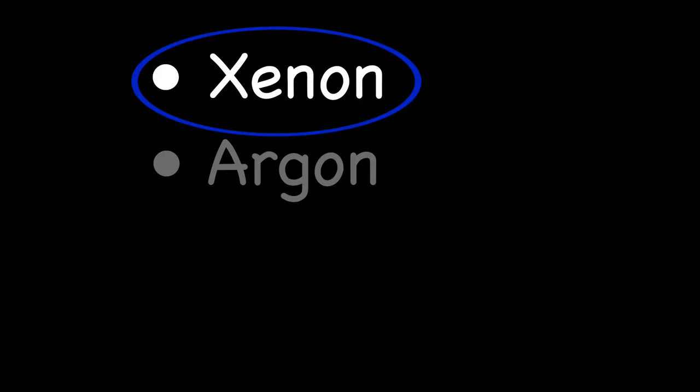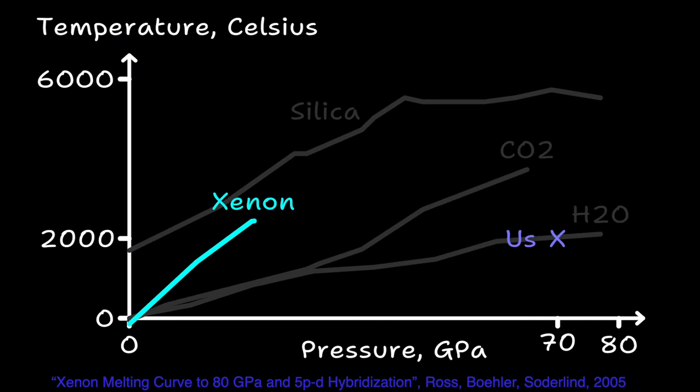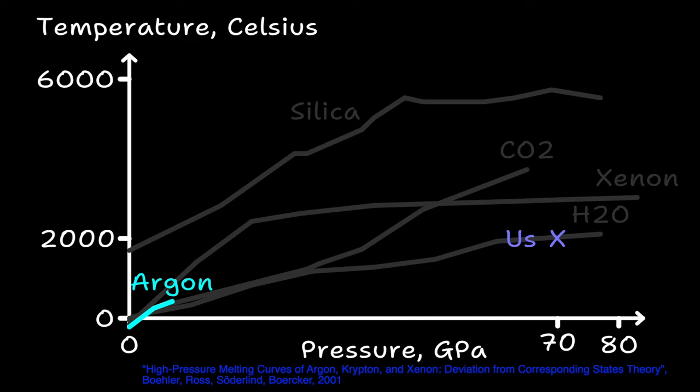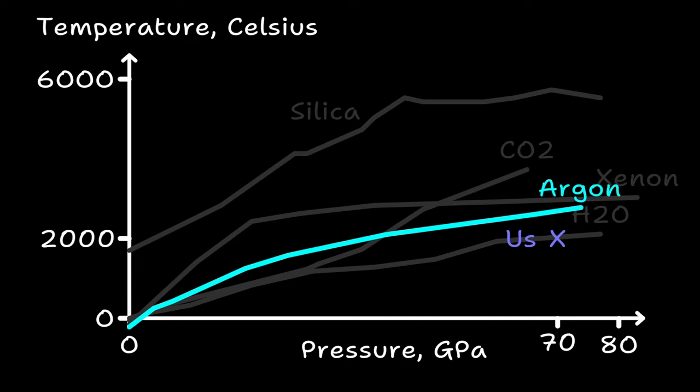Let's check xenon first. Here's the melting curve for xenon. Oh. Okay. No go. Alright. Let's check argon. Oh. Okay. So argon will be solid too. 70 gigapascals freezes everything.